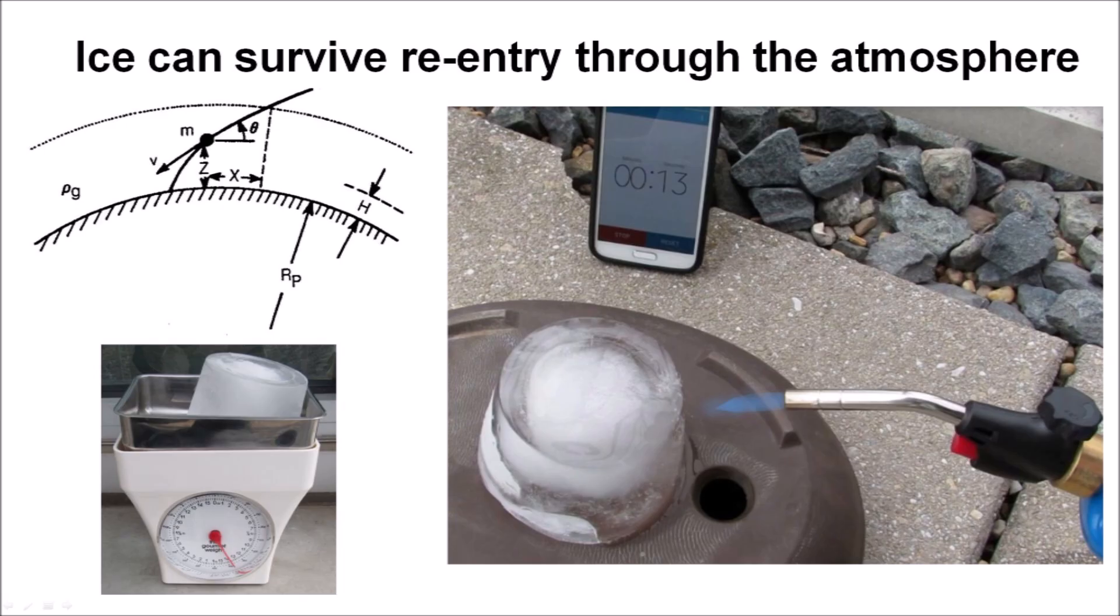In 2019, I conducted an experiment to determine how much ice would melt during one minute at the reentry temperature typical of the space shuttle, which is slightly lower than the 1,995 degrees Celsius produced by a propane torch. Blasting an ice chunk for one minute with a propane torch only melted 10% of the ice. This amount of ablation would have left enough ice to impact the earth and create the Carolina Bays.